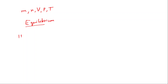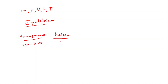Systems can be homogeneous or heterogeneous. A homogeneous system has all the same phase — all liquid, all solid, or all gas. A heterogeneous system has multiple phases. For example, an ice cube in water is heterogeneous, as it contains both a solid phase and a liquid phase.